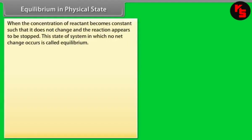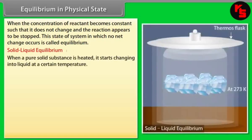Equilibrium in Physical State. When the concentration of reactant becomes constant such that it does not change and the reaction appears to be stopped, the state of system in which no net change occurs is called equilibrium.